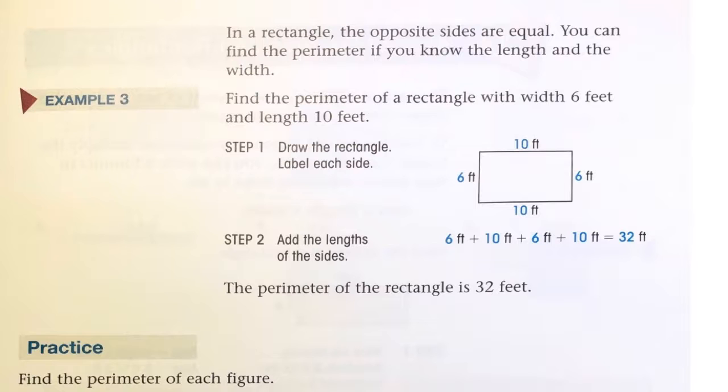For rectangles, we can do a similar thing. The opposite sides are equal lengths. You can find the perimeter if you know the length and the width.